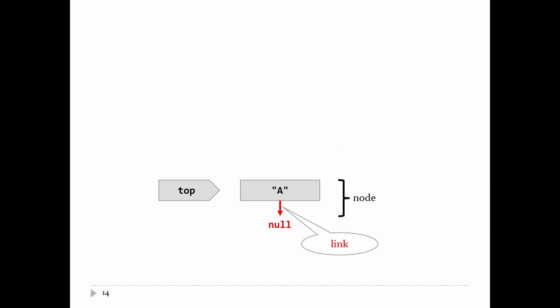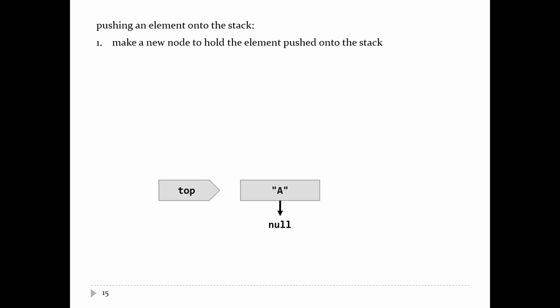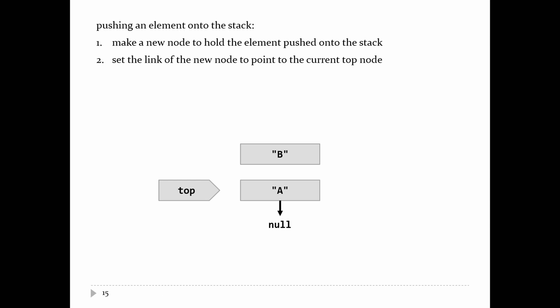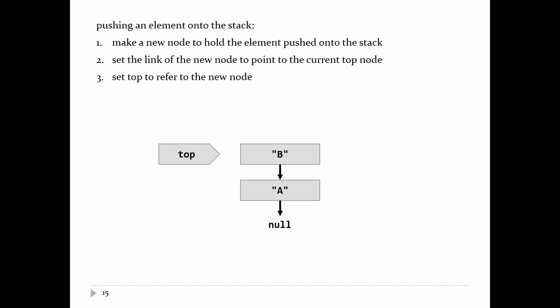When you push element b onto the stack, make a new node storing a reference to string b. Then hook it up: set the new node's link to point at the current top node. Adjust top to point at the new node, and add one to the size. Push another element c: make a new node, hook it to the current top, and adjust top to the new node. To pop: return c to the caller. Get the element from the top node, adjust top to point at the next node (top.next), and the old node disappears since no one references it.